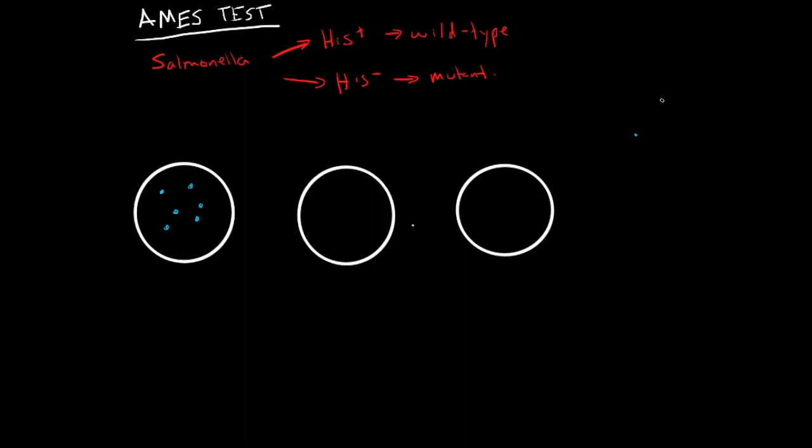This guy named Bruce Ames in 1975, who was a bacterial geneticist, made his own kind of method that would test for whether something was a mutagen or not. So he was growing Salmonella, which is a bacteria here, and he had two different strains.